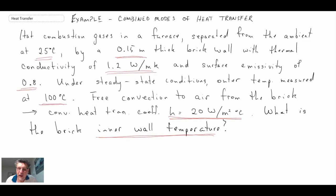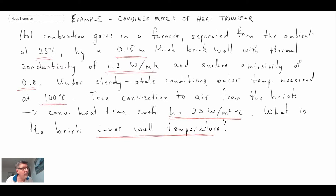So here we have a problem. Analyzing it quickly: given that we have thermal conductivity, that means we have conduction going through the brick wall. We're given a convective heat transfer coefficient, so we have convective heat transfer. And they give us emissivity, which means we have radiative heat transfer as well. So what we're going to do is use the surface energy balance — the concept we looked at in the last segment — to solve the problem.